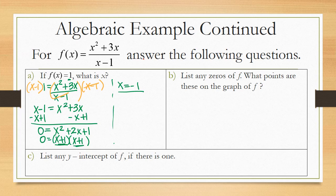List any zeros of f. What points are these on the graphs of f? So the zeros of f are going to be when the function equals 0. So let's set this whole function equal to 0.